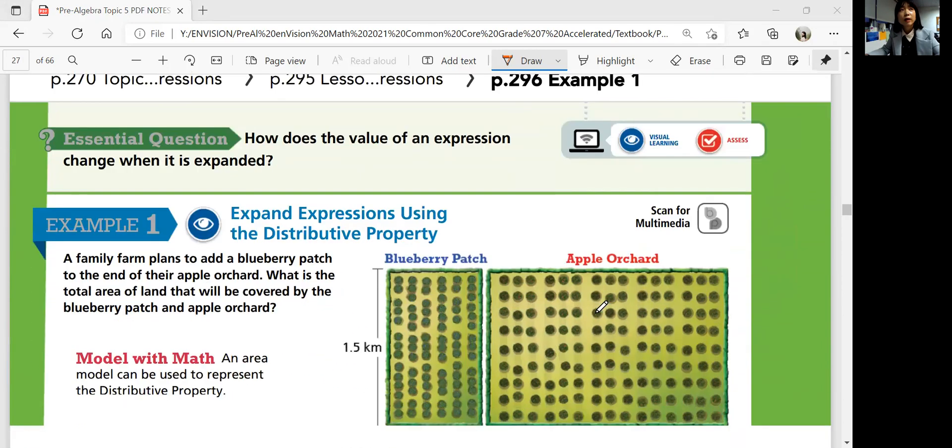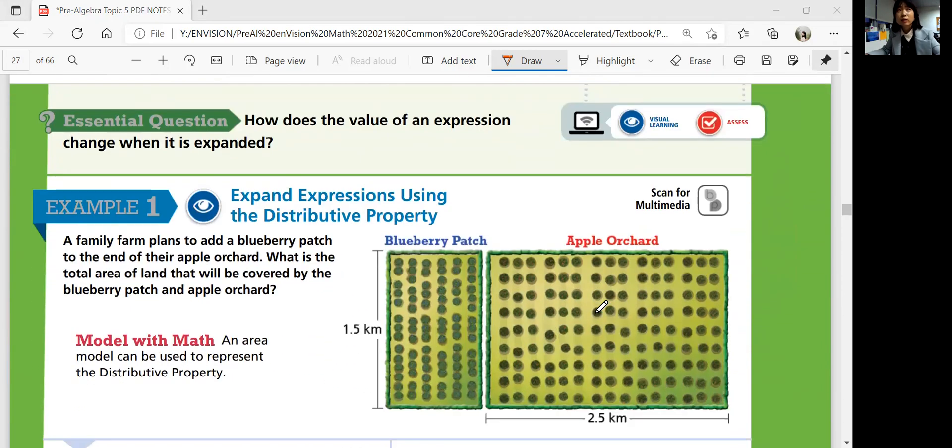Moving on to example one. How does the value of an expression change when it is expanded? Expand expressions using the distributive property. A family farm plans to add a blueberry patch to the end of their apple orchard. What is the total area of land that would be covered by the blueberry patch and apple orchard?